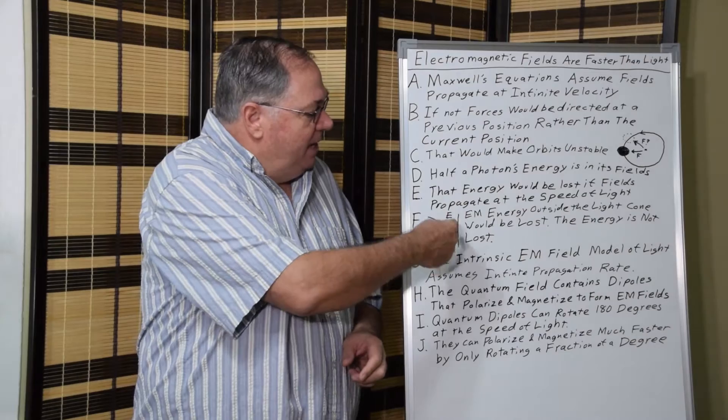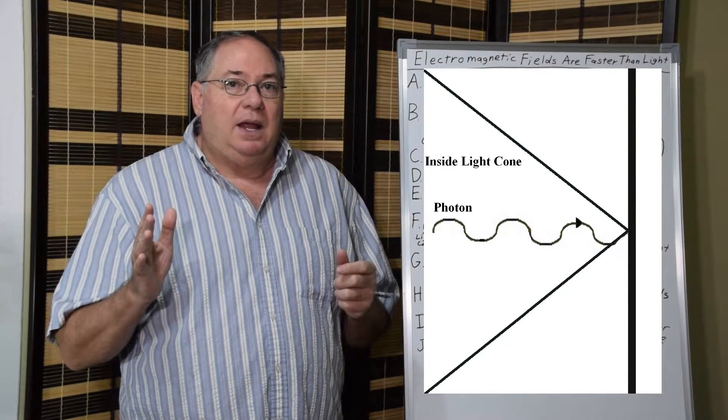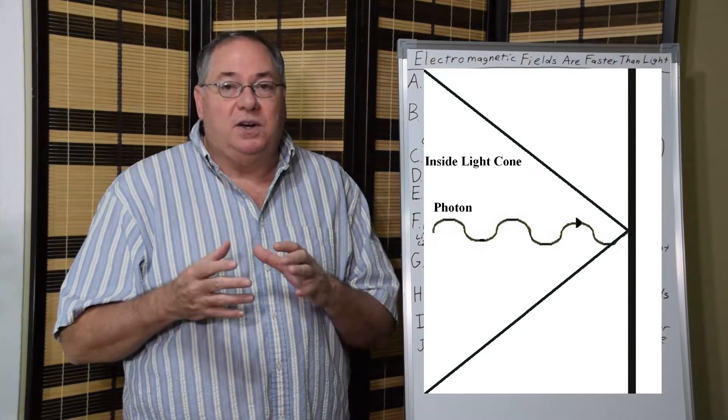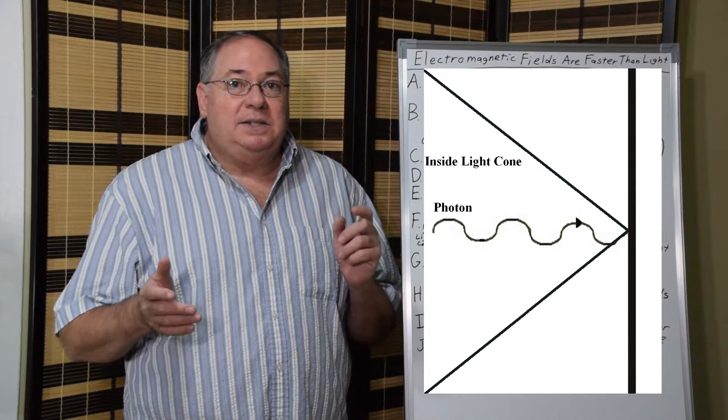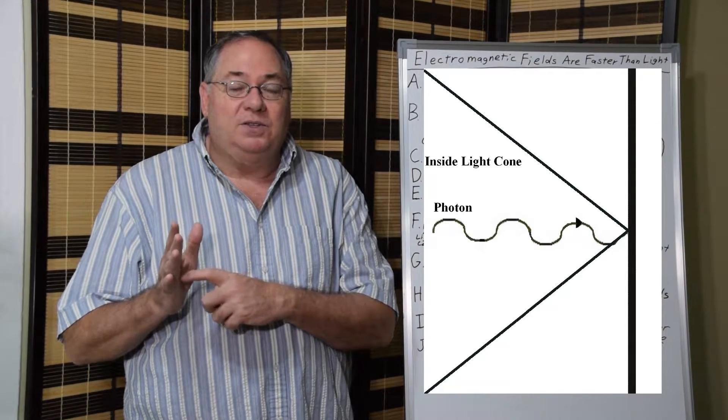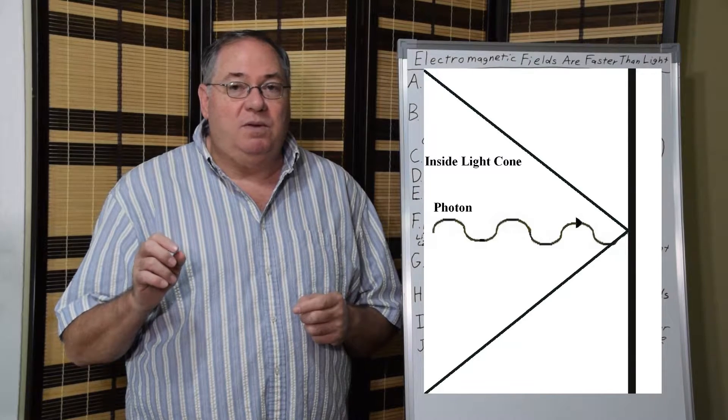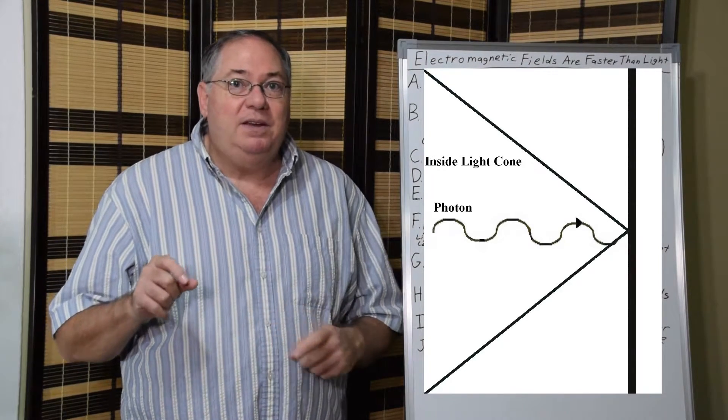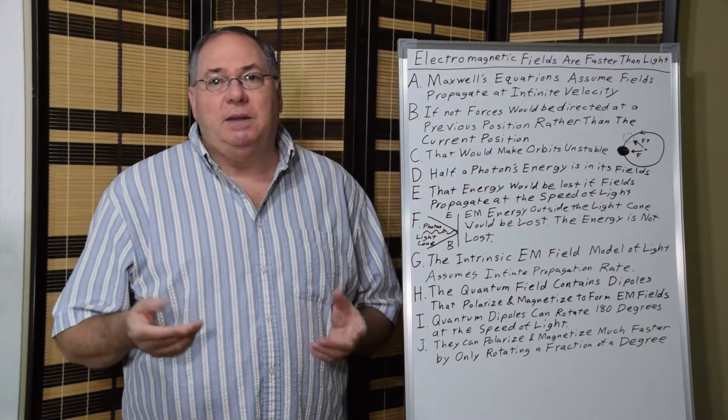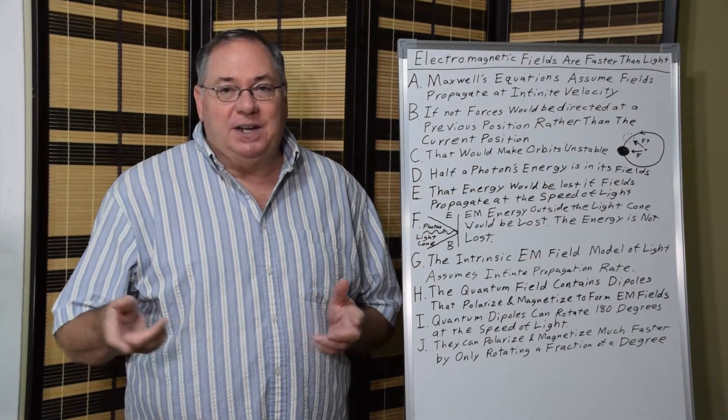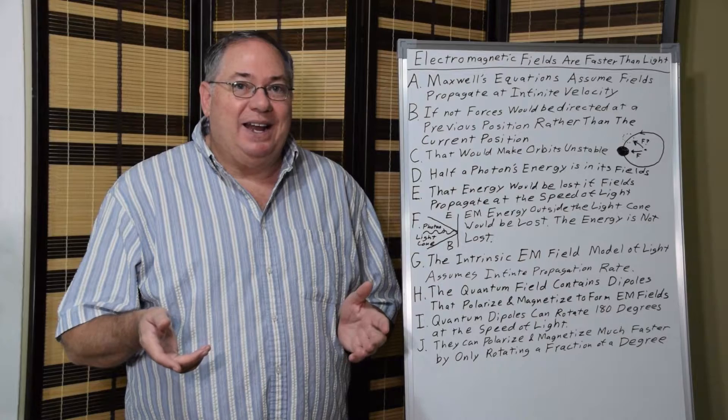We can see this when we look at the absorption. If we look at a photon being absorbed at a surface and the electric and magnetic fields are expanded out, like I said, possibly to infinity. As the photon gets within a half wavelength of the surface where it's being absorbed, if the fields could only move at the speed of light, you would only get a little bit of the field energy that gets back into absorption. Which would basically mean that photons would lose half their energy every time they get absorbed.